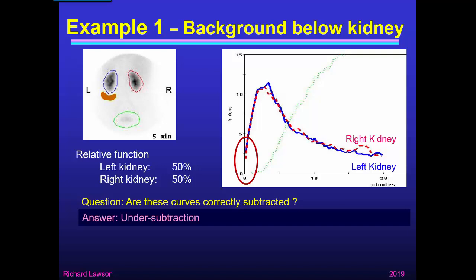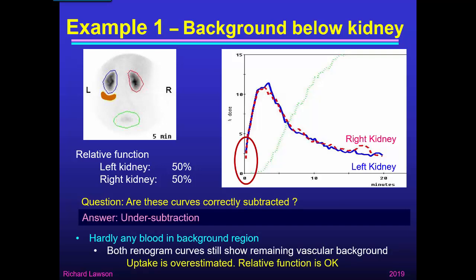I think these are undersubtracted. You can see that the background region we chose has hardly any blood in it, so both renogram curves still show some remaining vascular background. The curves don't start from zero — they start above zero — indicating there's still blood in those curves. That means we've overestimated the uptake in both kidneys. The relative function, however, may still be correct because we've overestimated both kidneys by equal amounts.